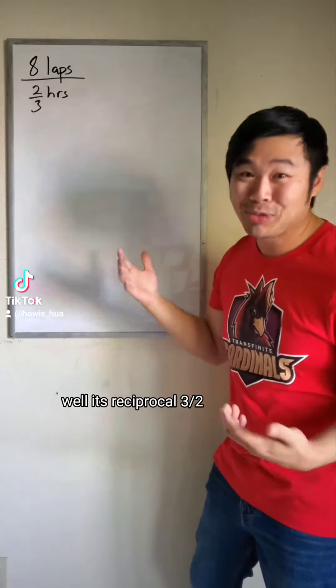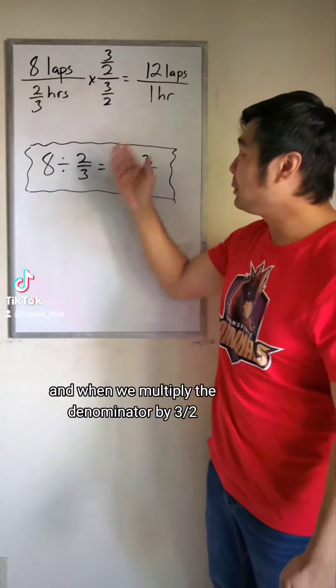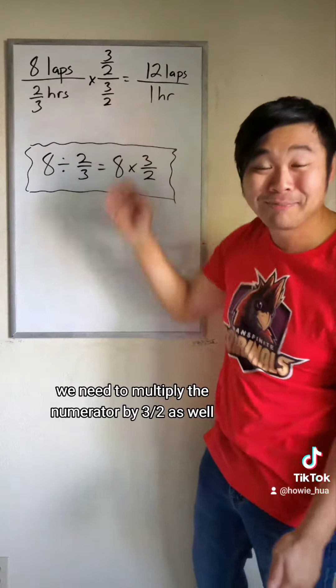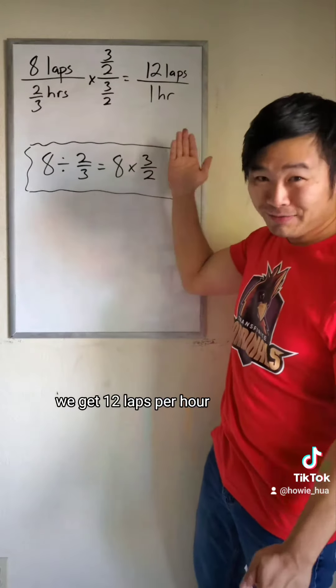Its reciprocal, three halves. When we multiply the denominator by three halves, we need to multiply the numerator by three halves as well. When we do that, we get 12 laps per hour.